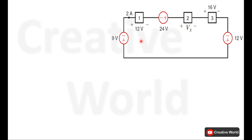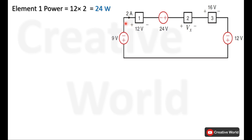We will start from element 1. Voltage across element 1 is 12 volts and current through it is 2 amperes. This current is entering from the positive terminal, so this current will be taken with positive sign. The power of element 1 will be 12 multiplied by 2, which is 24 watts, and because of the positive sign this power is being absorbed by element 1.